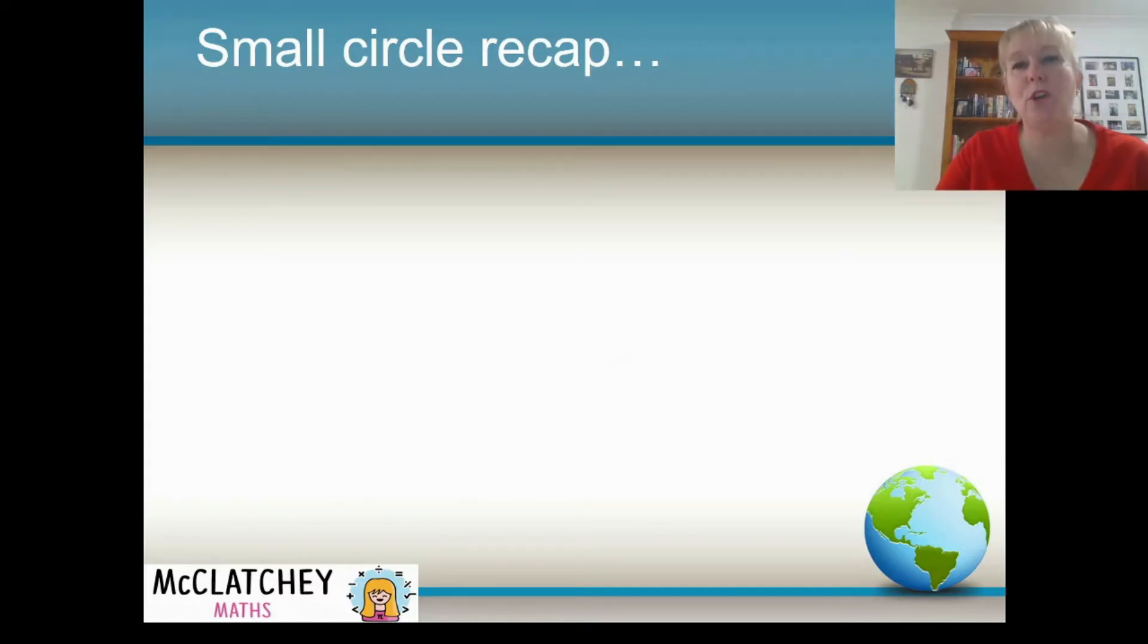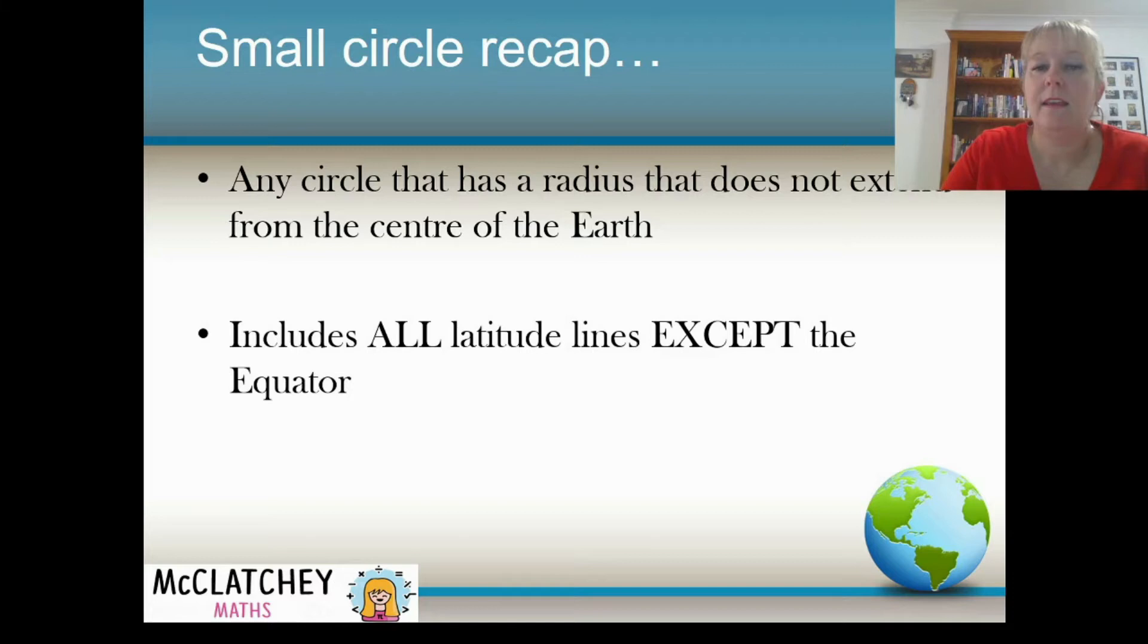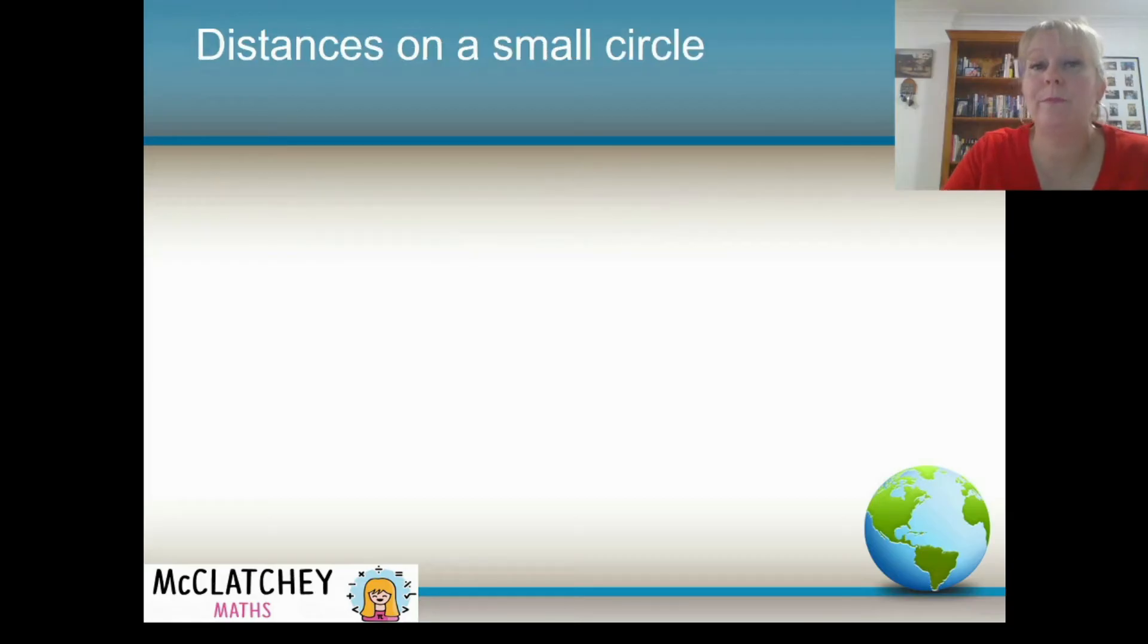Okay, let's talk a little bit about small circles. Now, these are all our lines of latitude. And these are also other circles that might be placed on the earth. Now, these are all circles that have a radius that does not extend from the earth's center. Now, the only line of latitude it does not include is our equator, because as previously mentioned, that's a great circle.